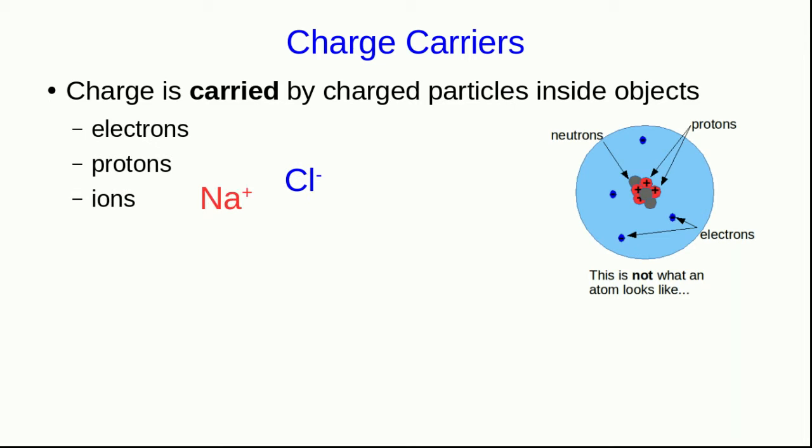But objects can also have ions in them, such as sodium and chloride ions. And there can be molecular ions in or on objects, which also carry charge. So all of these charged particles are examples of charge carriers.